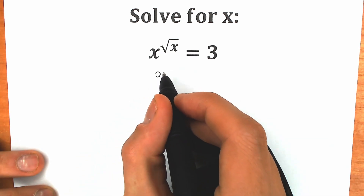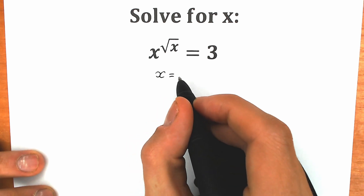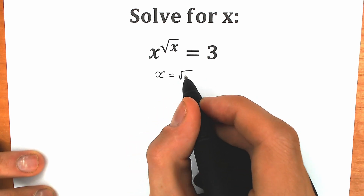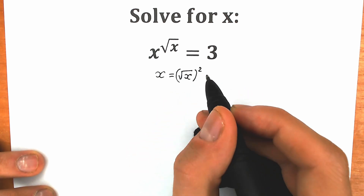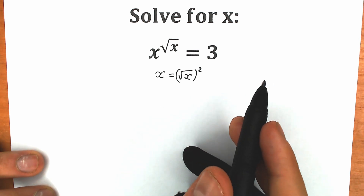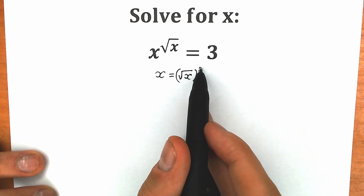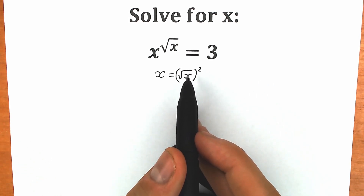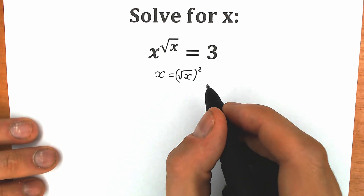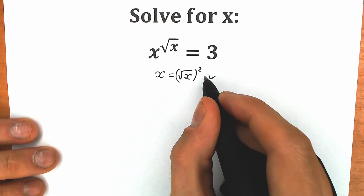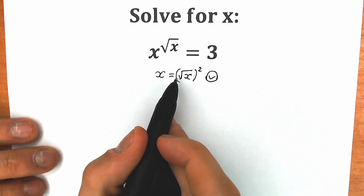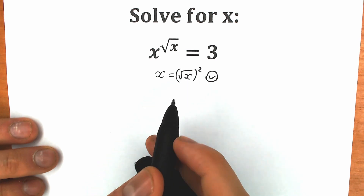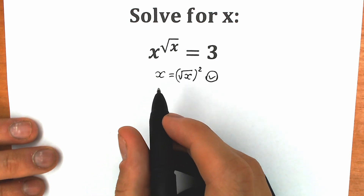We can write x here and let's change x by this expression: let's change this x by square root of x to the second power. We can easily do this — this is absolutely the same expression, because when we raise the square root to the second power we can easily cancel these. So right now instead of this x let's plug in this square root of x to the second power.